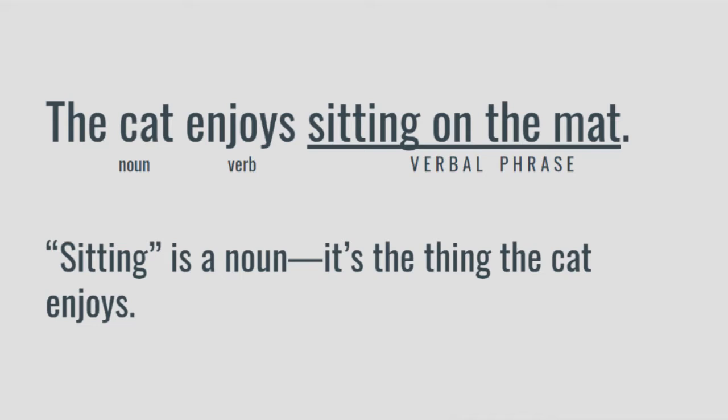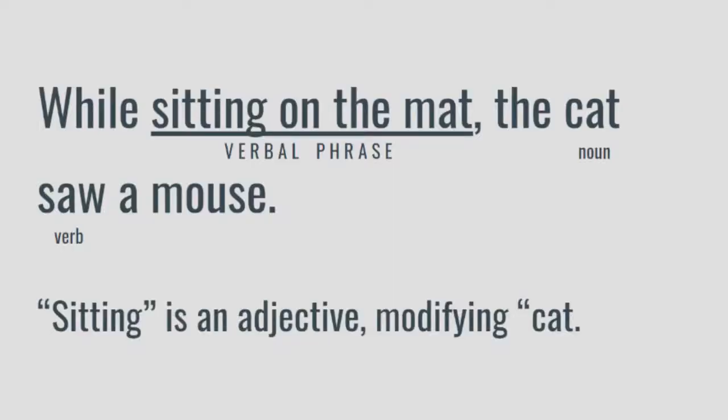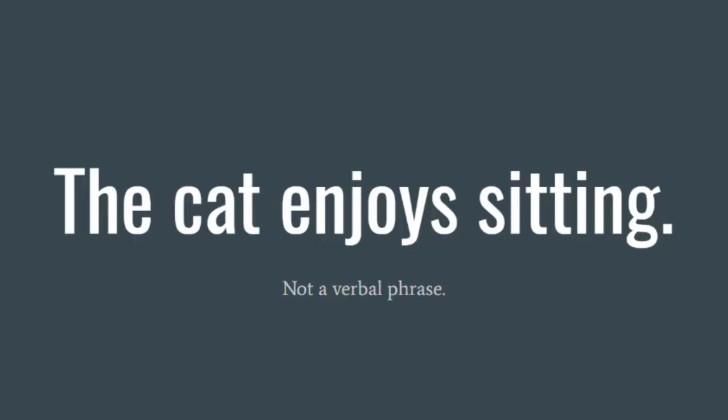The cat enjoys sitting on the mat. In this example, 'sitting' is a noun, because it's a thing that the cat enjoys. Let's take a look at another example: While sitting on the mat, the cat saw a mouse. Here, 'sitting' is an adjective — it modifies 'cat' and tells us the state of the cat: sitting on the mat. It is important to note that a sentence that lacks a modifier — for example, 'the cat enjoys sitting' — contains a verbal, but is not a verbal phrase, because it doesn't have any other modifiers or items added to the phrase.